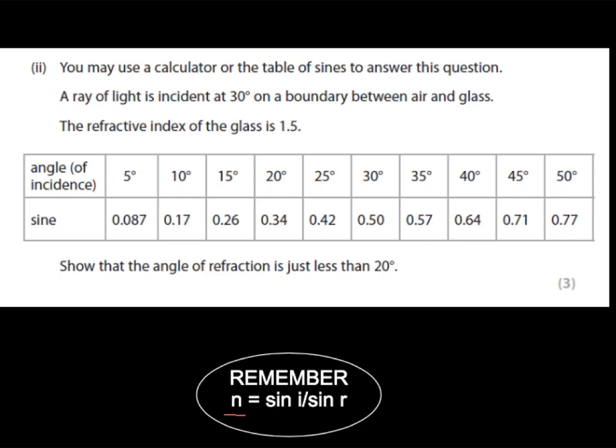From the question, we have n, which is the refractive index, which is 1.5. And we are also being given the angle of incidence, which is 30 degrees, which is i. We now need to rearrange this equation so that sine r is the focus. When rearranged, this equation will be sine r equals sine i over n. We can now plug our numbers in. This will become sine r equals sine 30 over 1.5, which equals 0.3 recurring.